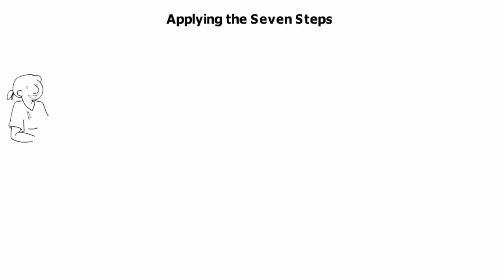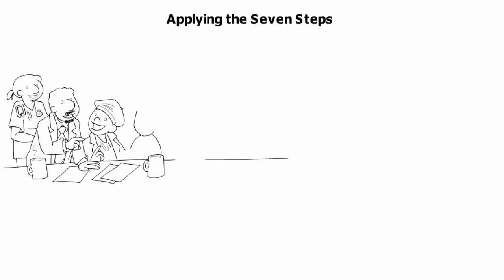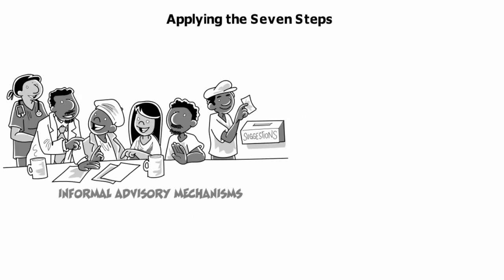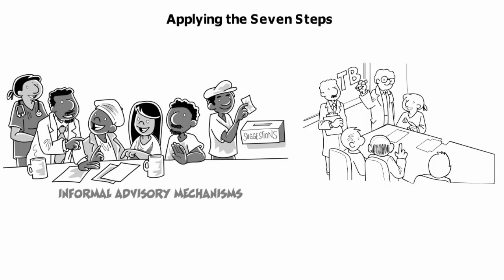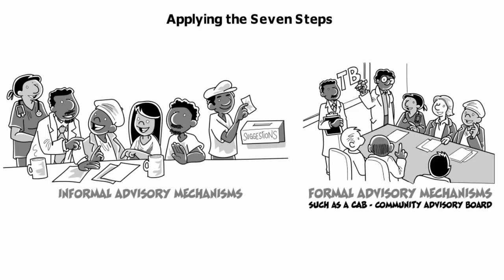Applying the seven steps works best when we have formal and informal strategies, approaches, and structures in place. We can do these informally through meetings, focus group discussions, interviews, suggestion boxes, and other locally-based events. We can also establish formal mechanisms, like trial participant groups, professional groups, or community advisory boards. It is important that these structures are in place and all stakeholders are considered.